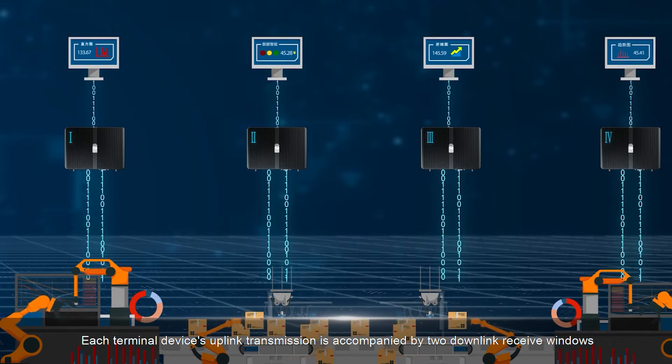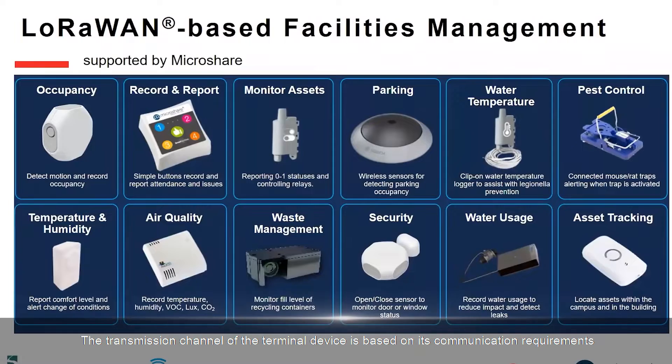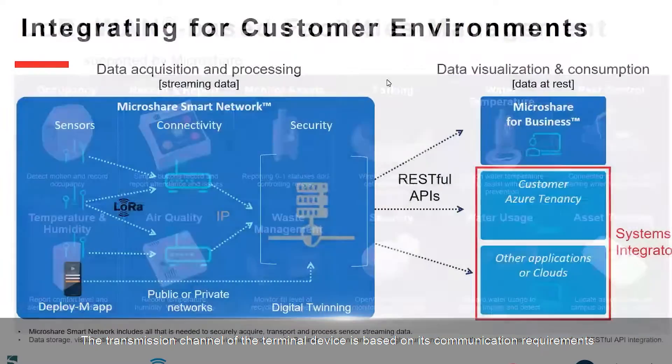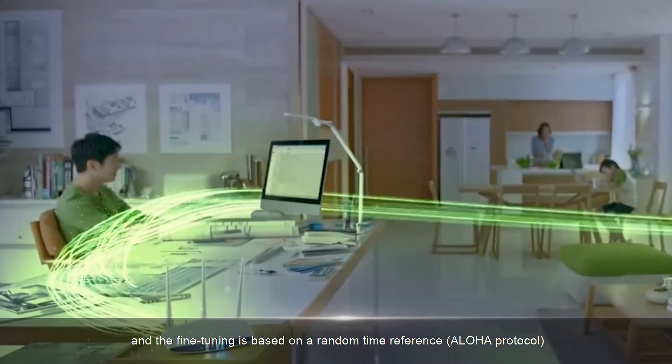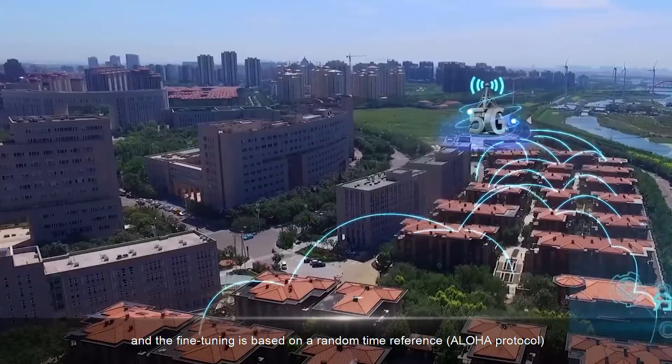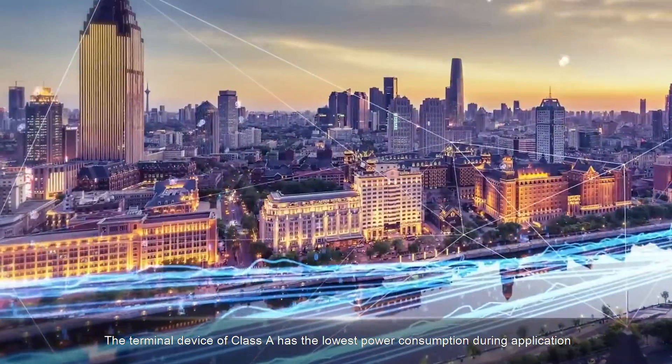Each terminal device's uplink transmission is accompanied by two downlink receive windows. The transmission channel of the terminal device is based on its communication requirements, and the fine-tuning is based on a random time reference (ALOHA protocol). The terminal device of Class A has the lowest power consumption during application.